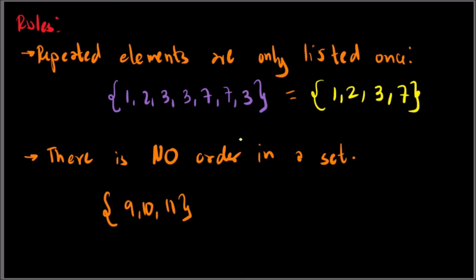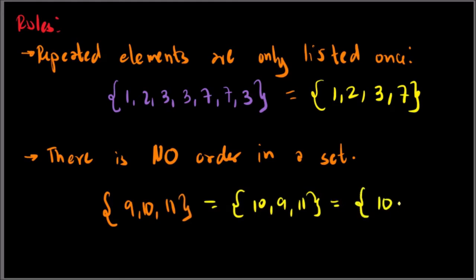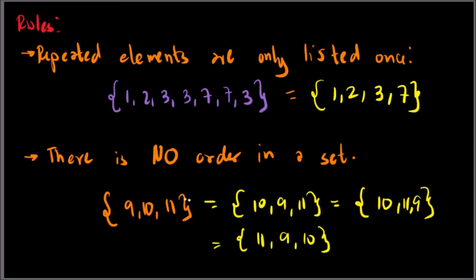Also, there is no order in a set — we could write our set in any order we want. There is no standard order, so you could write it in ascending order, descending order, or random order. For example, {9, 10, 11} could also be written as {10, 9, 11}, {10, 11, 9}, or {11, 9, 10}. These four sets are the same set; their order is just different.